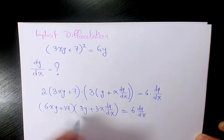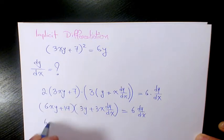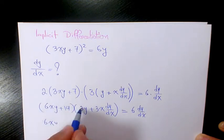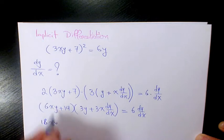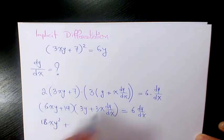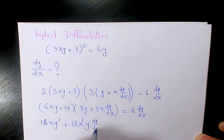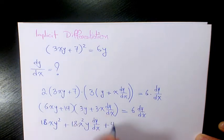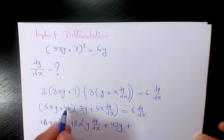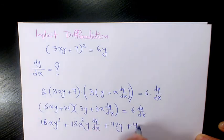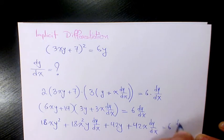So when you distribute it, it's going to be 18xy squared plus 18x squared y dy over dx plus 14 times 3y, which is 42y, plus 42x dy over dx equals to 6 dy over dx.